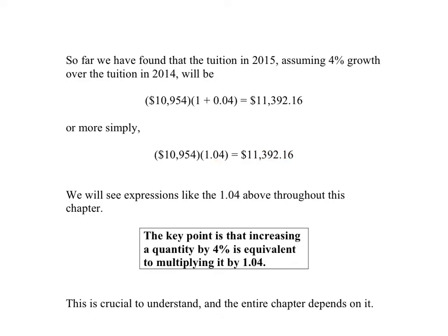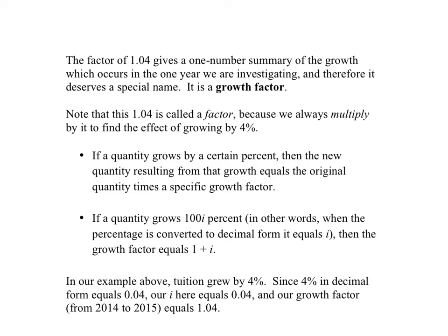We're going to see expressions like 1.04 throughout this chapter — it's a very important type of mathematical expression. The key point is that increasing a quantity by 4%, causing it to grow by 4%, is equivalent to multiplying it by 1.04. This is a crucial idea that the entire subject rests upon. This factor of 1.04 deserves a special name: it's called a growth factor.